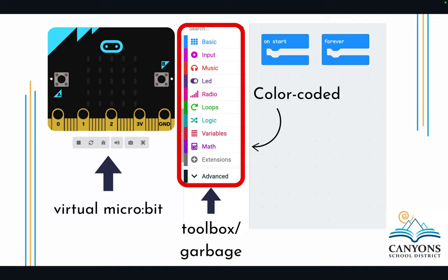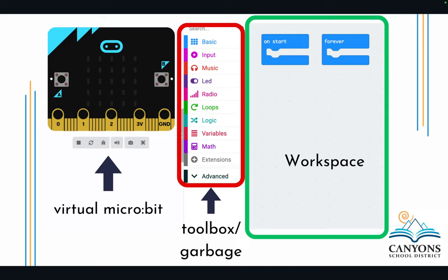Notice that the toolbox items are color-coded. You've got basic functions like LED, inputs for how things are triggered, music, radio for more complex communication, loops, variables — those are more advanced features that can be added as students get to know the platform more. On the right-hand side is your workspace, where you take these objects and drag them in to build your program.